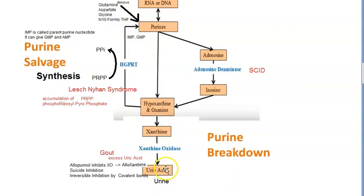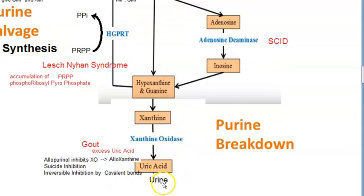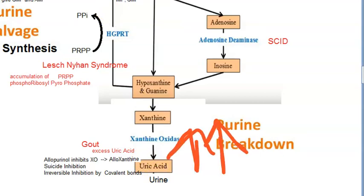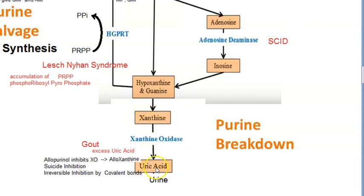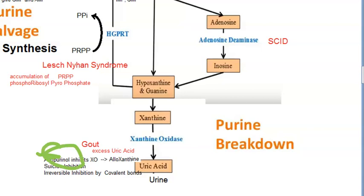The kidney is supposed to excrete uric acid in the urine; however, if it is too much or the kidney has a problem, there will be a lot of uric acid accumulation. The enzyme xanthine oxidase converts xanthine into uric acid — important to remember for exams. Treatment comes here: allopurinol inhibits xanthine oxidase, stopping uric acid formation. So there is no formation of uric acid.